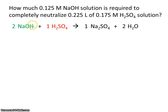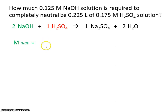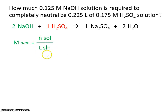Notice that the base is in green and the acid is in red. As we carry out this calculation, everything pertaining to the base will be green and everything pertaining to the acid will be red. Let's start off using the molarity equation: molarity of base equals moles of base divided by liters of base solution. The concentration of base is 0.125.